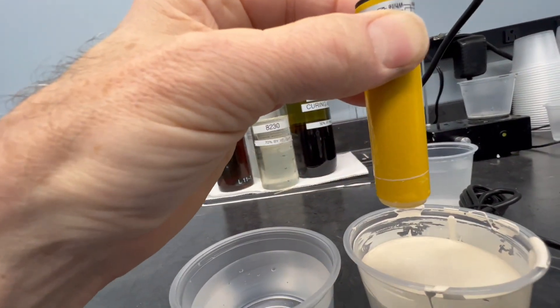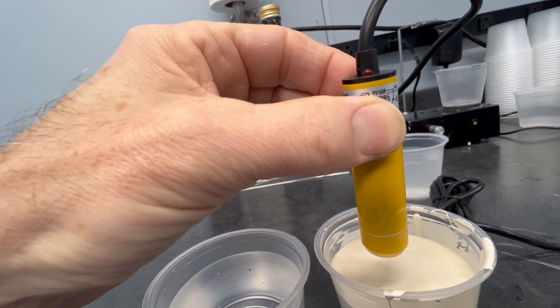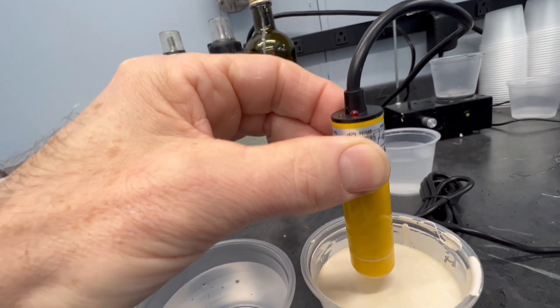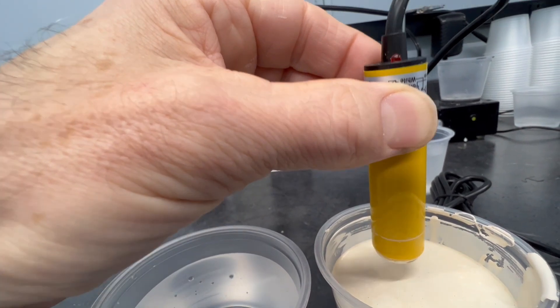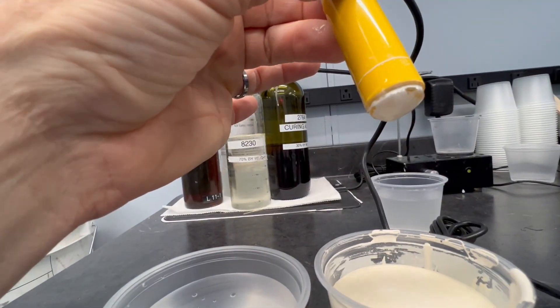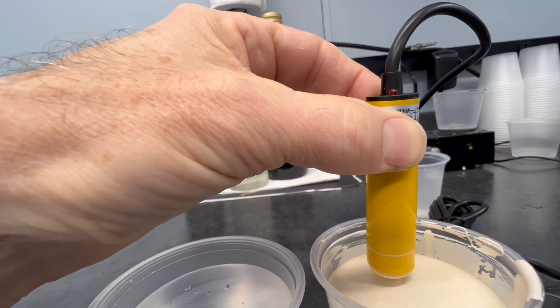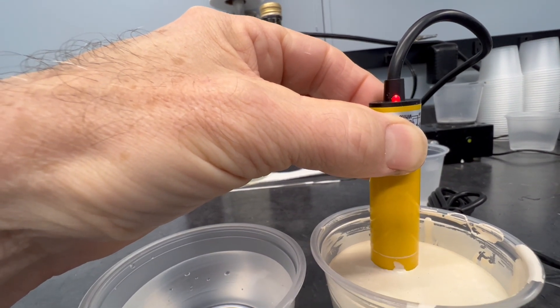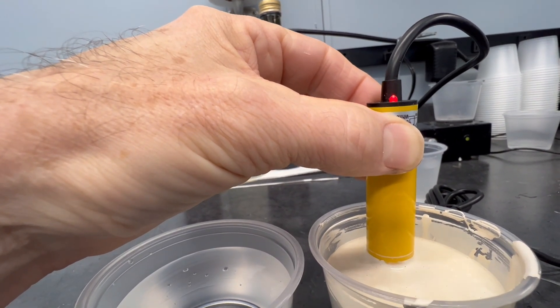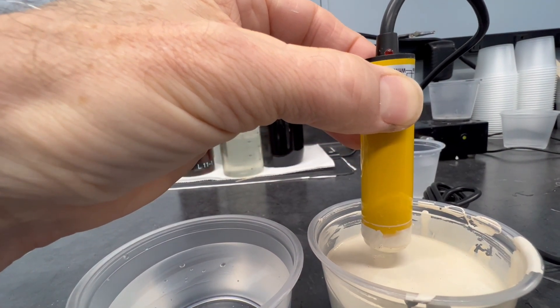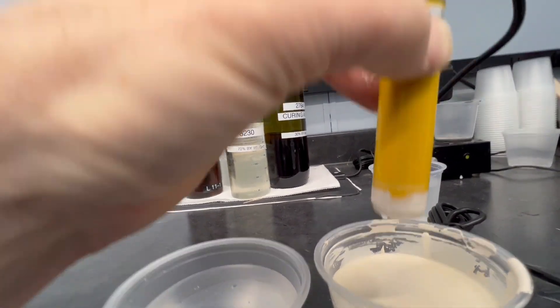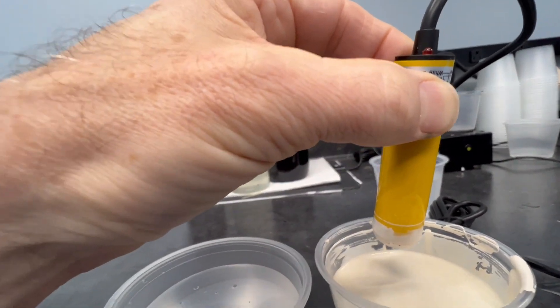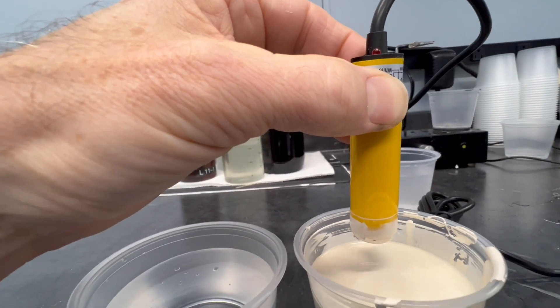So now we're going to go into some paint. Same thing. Let's see if we can catch this. So now it's just touching the paint. Just the bottom. I'm going to put it all the way into the paint now. And even though there's quite a bit of paint coating the surface, it still recognizes that it's no longer at high level.